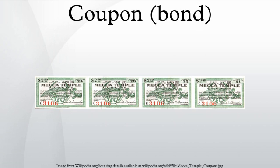Not all bonds have coupons. Zero-coupon bonds are those that pay no coupons and thus have a coupon rate of 0%. Such bonds make only one payment: the payment of the face value on the maturity date.